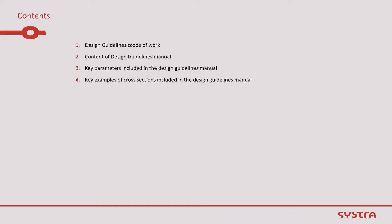For today's presentation, I'm going to cover: first, what was the scope of work for the design guideline and why we needed one; then the different terms of the design guideline; the key chapters and key parameters included; and a few cross-sections which are included in the design guideline.